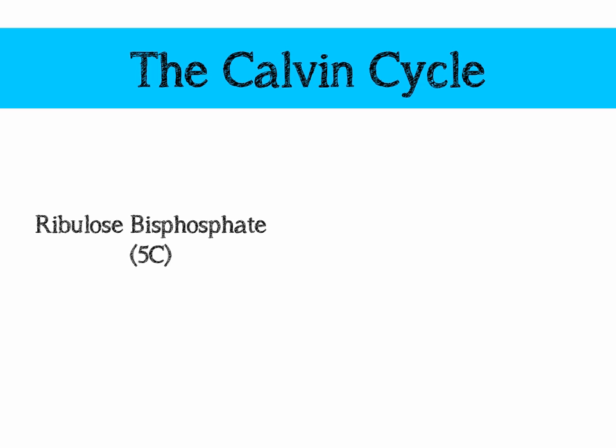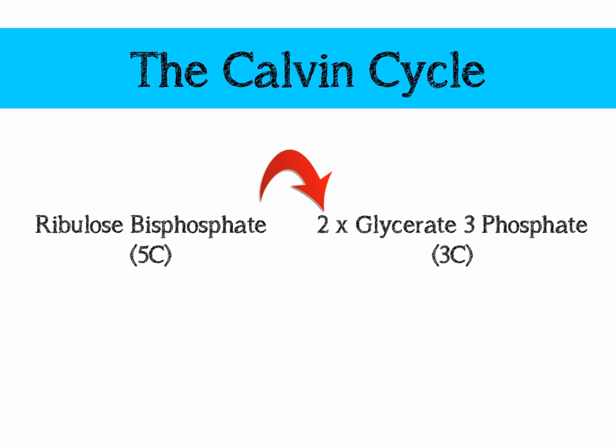The Calvin cycle starts with a compound called ribulose bisphosphate, abbreviated RuBP — a five-carbon compound. This gets converted into two molecules of glycerate-3-phosphate (G3P), but we need an extra carbon from carbon dioxide. CO₂ won't bind with RuBP on its own; it needs the enzyme RuBisCO. RuBisCO combines CO₂ and RuBP to form a six-carbon sugar, which spontaneously splits into two molecules of G3P. We then want to reduce this G3P to something called triose phosphate.